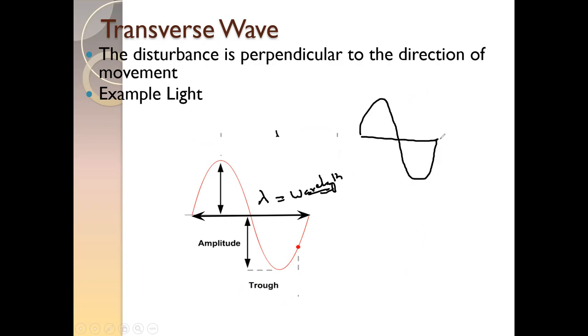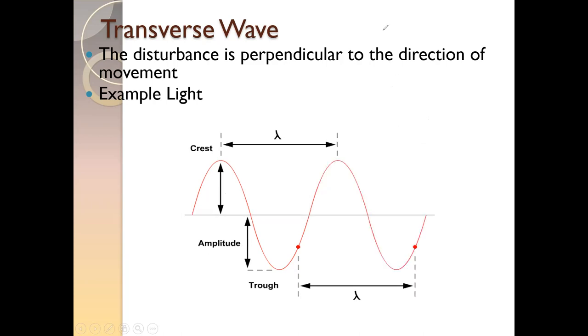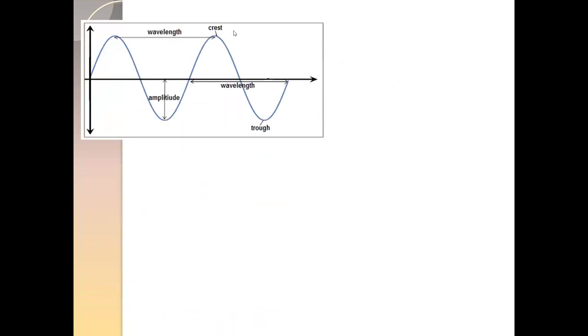The total length of one complete crest and one complete trough is the wavelength, denoted by the Greek alphabet lambda. The height or depth of the wave is known as amplitude. The distance between two crests is also known as wavelength, as is the distance between two troughs. The distance from the center of the wave to the trough or to the crest is known as amplitude.